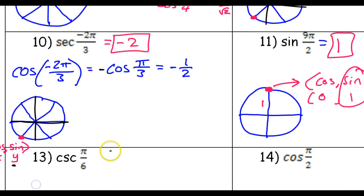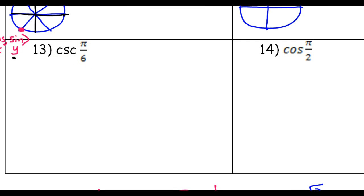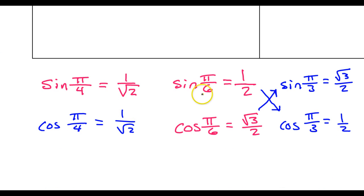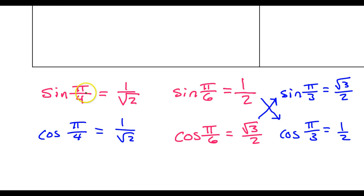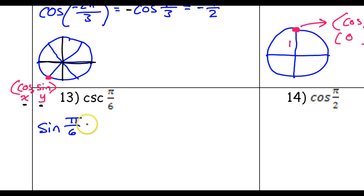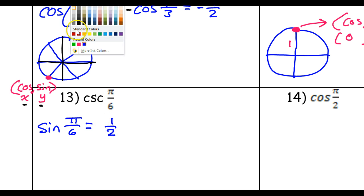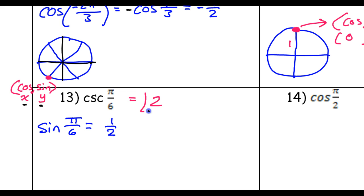Number 13: cosecant of pi over six. Cosecant is another reciprocal trig function — it's the reciprocal of the sine function. So let's start by finding the sine of pi over six and then do the reciprocal of it. The sine of pi over six is one of the three values we memorize — please make sure you actually memorize these three pink values. So sine of pi over six is one half immediately, which means the cosecant is just going to be the reciprocal of this — so that's going to be two. That's the answer.